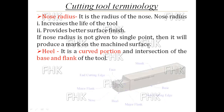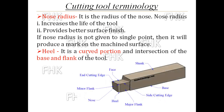Next is the heel. It is the curved portion at the intersection of the base and flank of the tool — that is the bottom surface. A radius is provided to the base and flank surface, and that curved intersection part is called the heel of the tool.